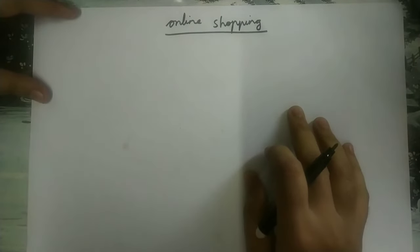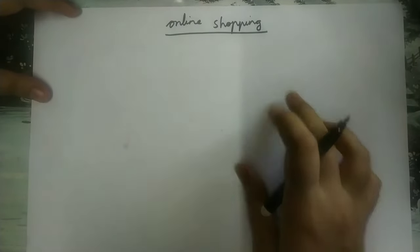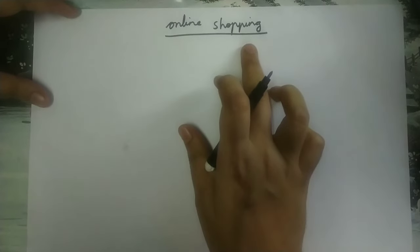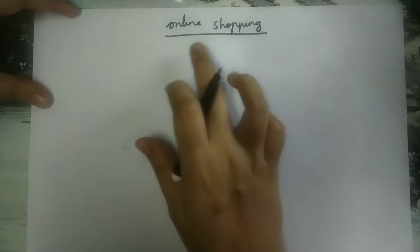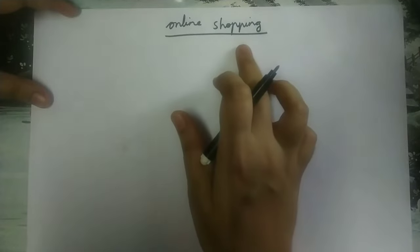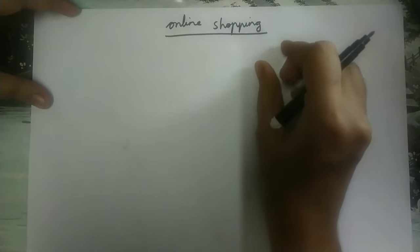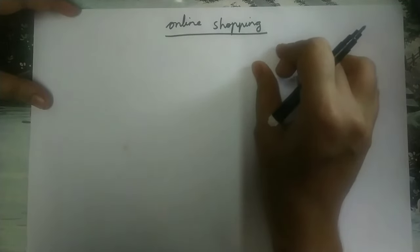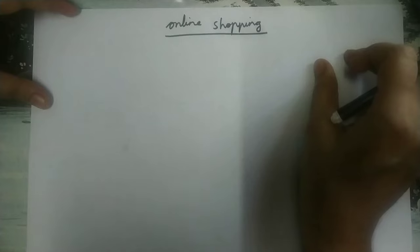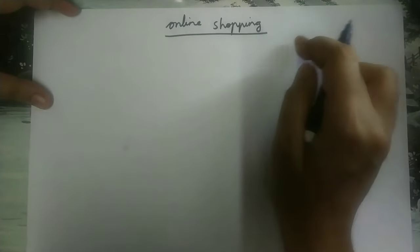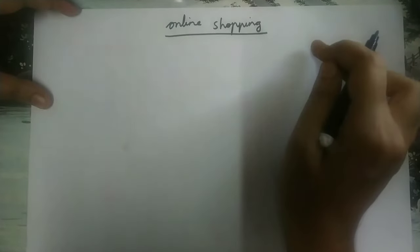In this video, let us draw the ER diagram for the topic online shopping. The first step is we need to choose the entities. So for online shopping, product must be there, and for buying that product, a customer must be there. So the first two entities are product and customer.